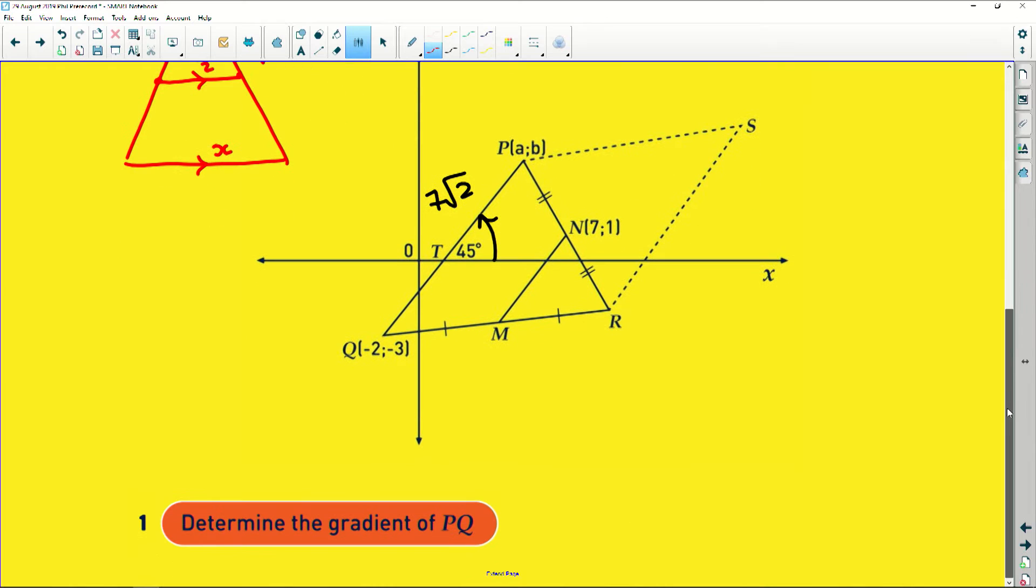So the first question says, determine the gradient of PQ. Now remember, gradient is equal to change in y over change in x. Now if we look here, this gradient is going to be constant no matter where we stop this line, because it's all one straight line. So if we decided to stop the line right here on the x axis, this would be the y distance, and that would be the x distance. So the change in y over the change in x is the same as saying tan of 45.